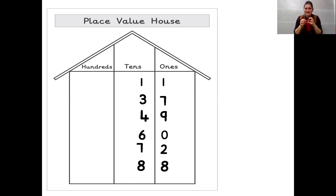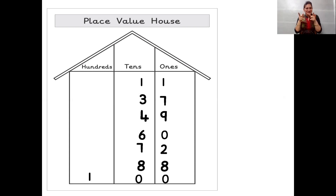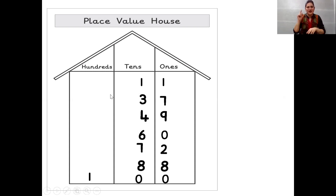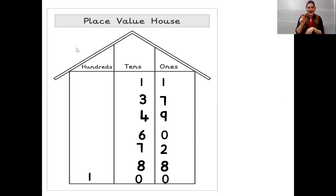Now which number is going to come? Hundred! Under hundreds we are going to write one, under tens we are going to write zero, and under ones we are going to write zero. So one hundred.